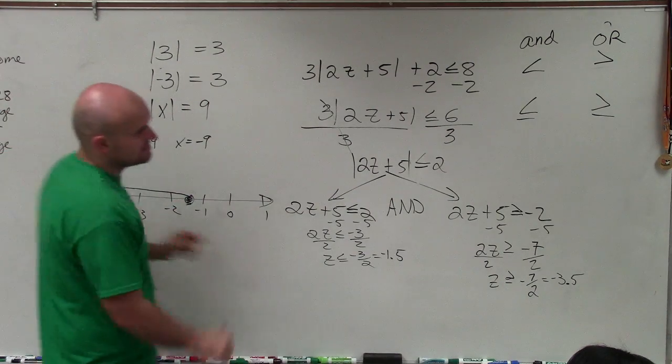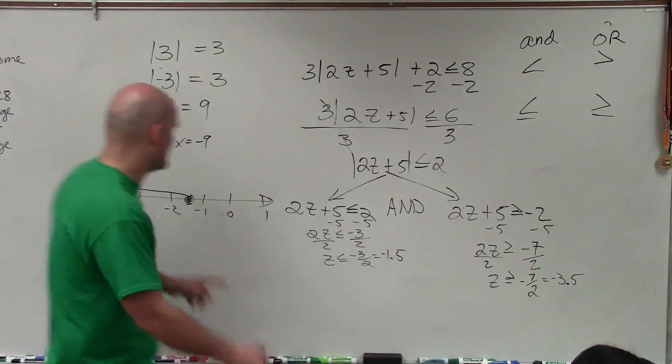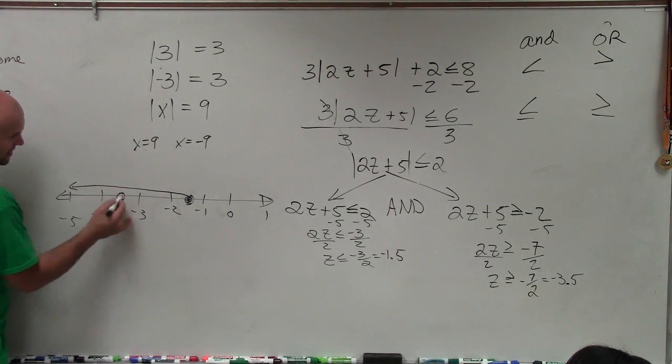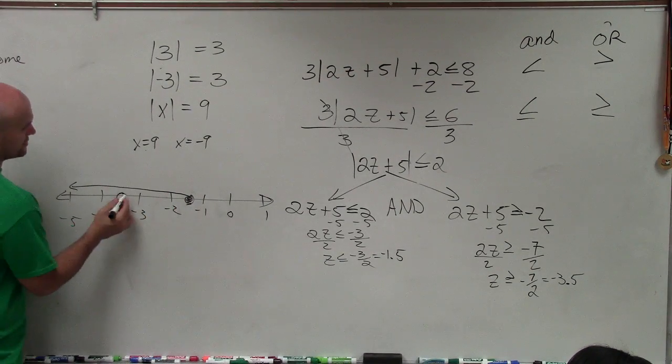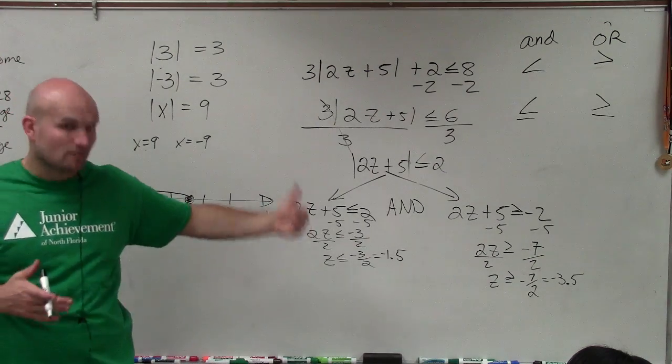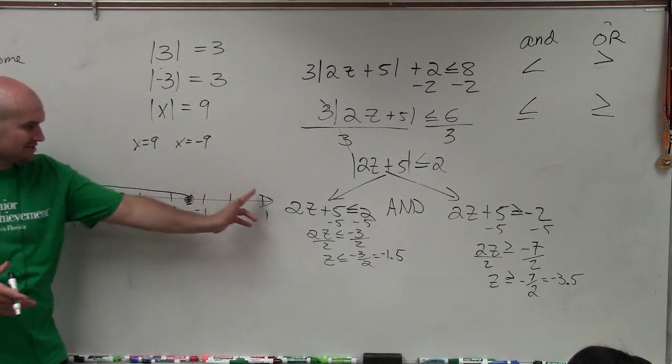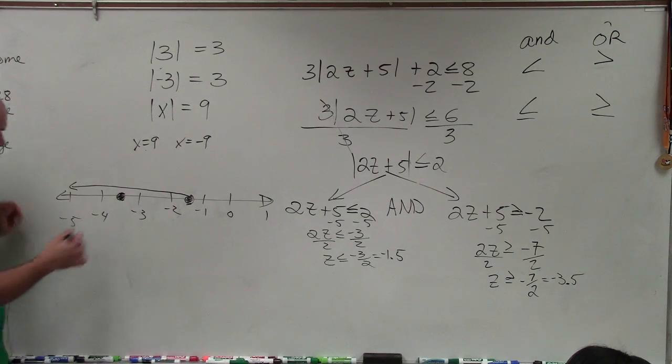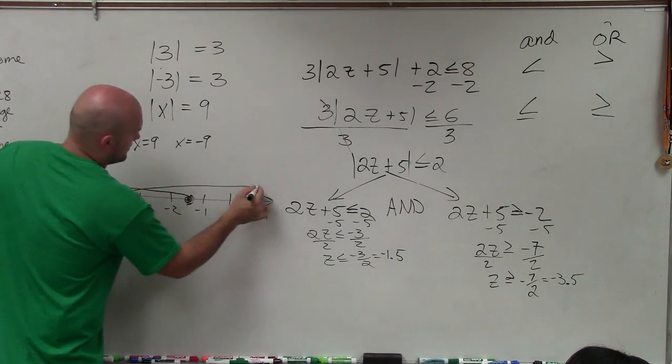Now, let's go and graph z is greater than negative 3.5. So I go and find negative 3.5, which is right here. Again, that's greater than equal to, so that's going to be open. And then that one says all values that are greater than negative 3.5. So is that going to be to the right or to the left? Right. Right?